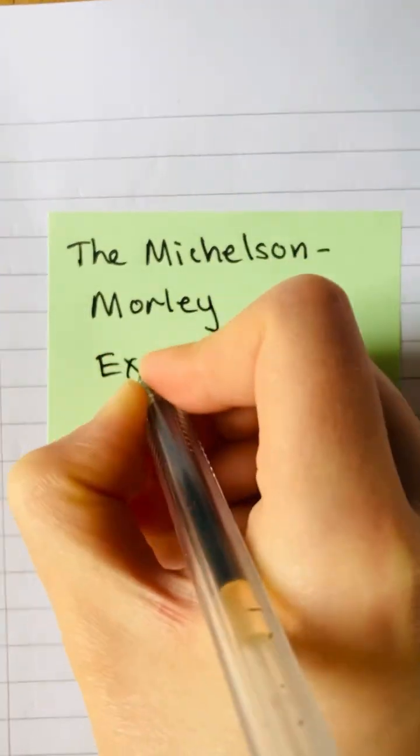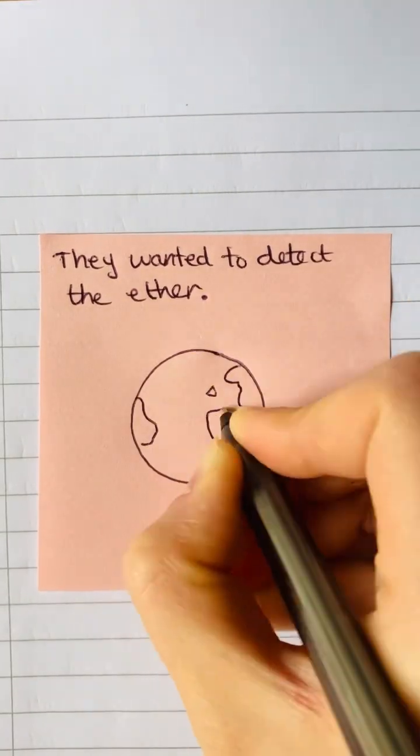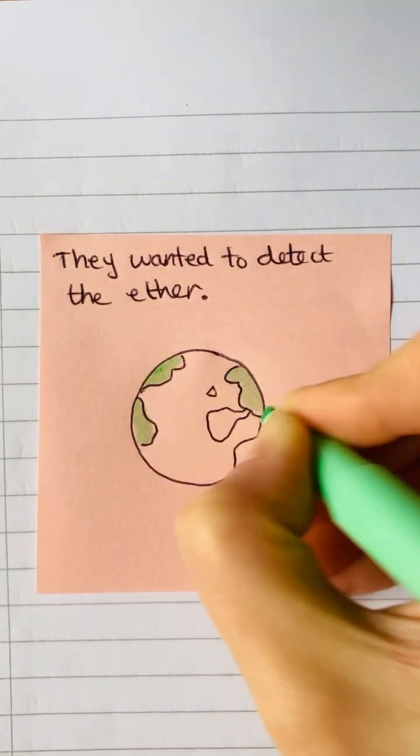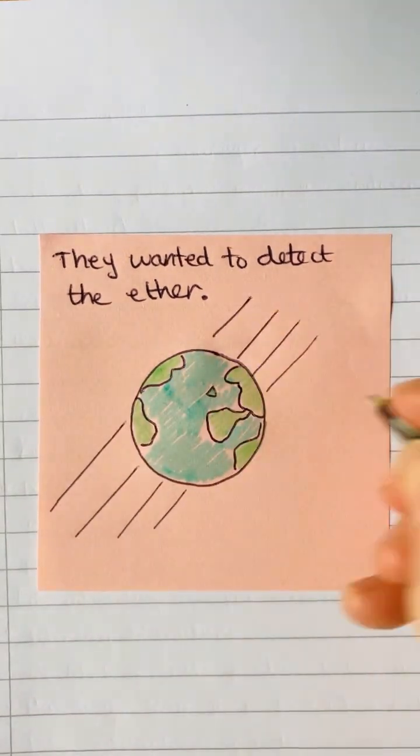The Michelson-Morley experiment in one minute. Michelson and Morley believed that there was an ether against which all speeds could be measured. They believed that the Earth's motion through the ether affected the speed of light in the direction of Earth's motion.